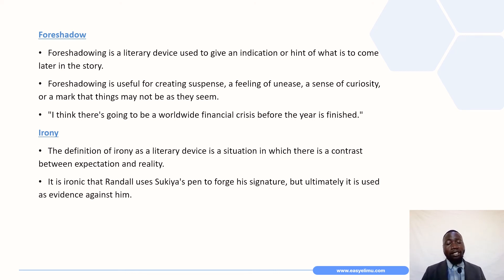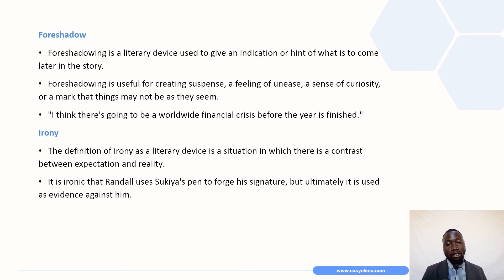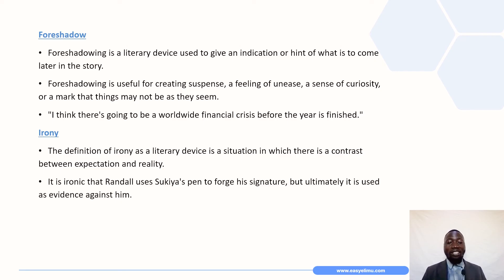Irony is a literary device that describes a situation in which there is a contrast between expectation and reality. In the short story Checkmate, it is ironic that Randall uses Sukiya's pen to forge his signature, but ultimately those forged signatures are used as evidence against him. That is one element of irony we are able to identify from the story.